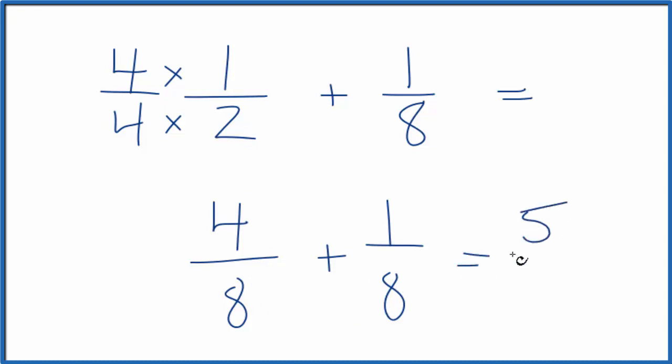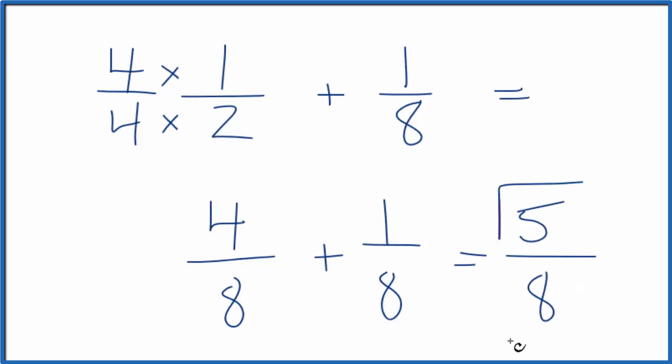Four plus one is five. Bring the eight across, five-eighths. So one-half plus one-eighth, that's five-eighths.